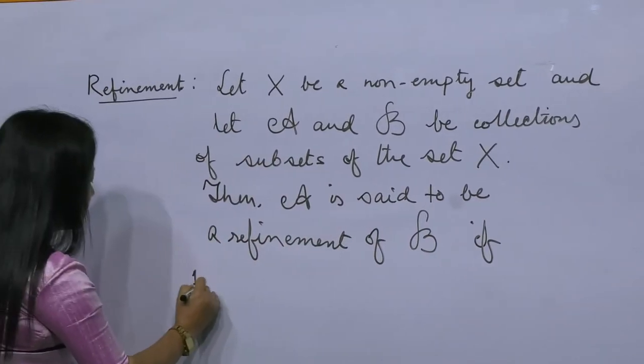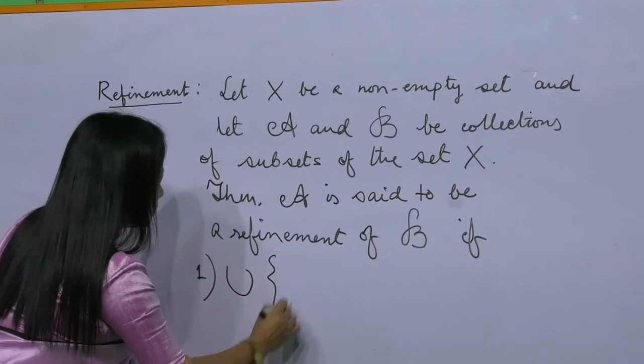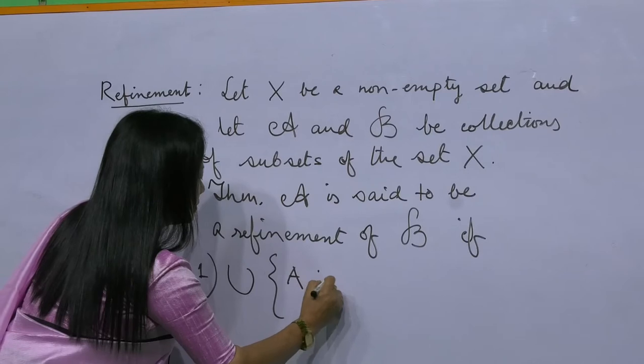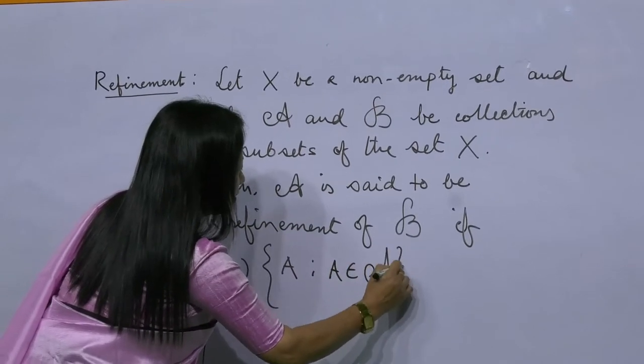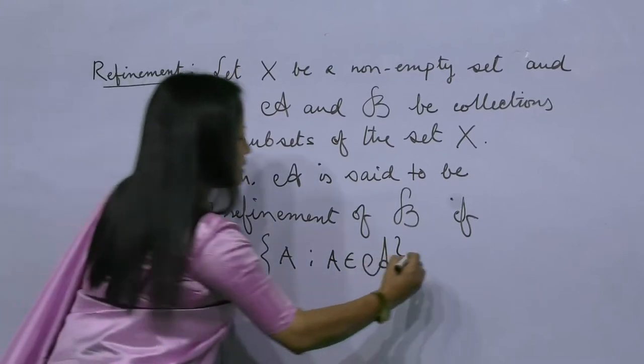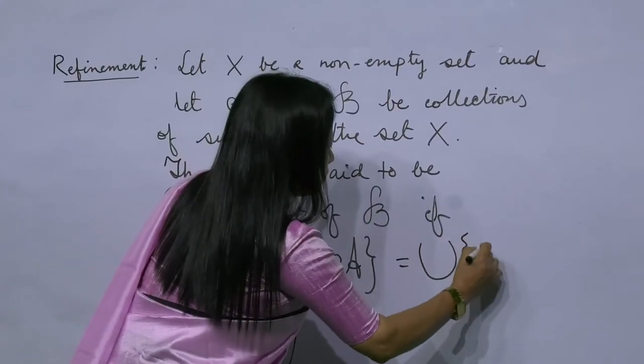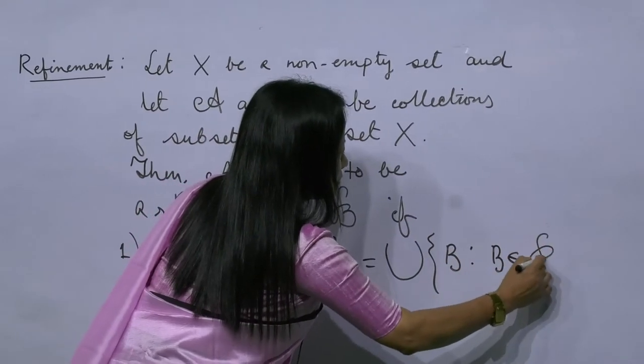The first condition is the union of all the members A of the collection A is equal to the union of all the members B of the collection B.